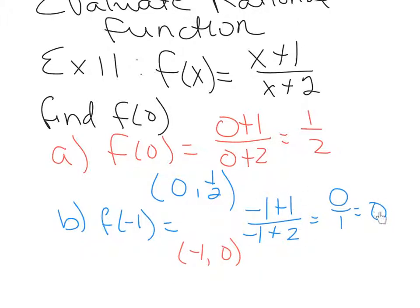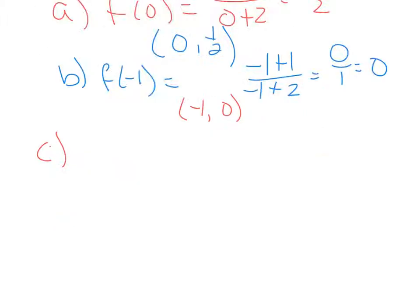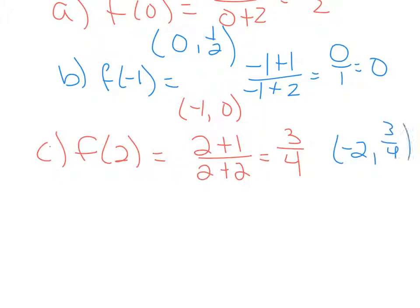Part c says find f(2), so we will substitute 2 in that function for x. We'll have 2+1 over 2+2. When we simplify we get 3/4. As an ordered pair, that means when x equals 2, y equals 3/4, and that would be an actual point on the graph of this function.